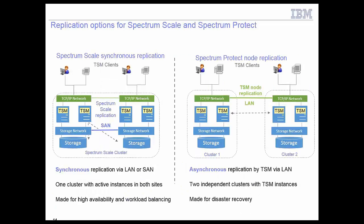There are two replication options. The first is Spectrum Scale synchronous replication, where instances run on both sides on NSD servers and each Spectrum Protect instance writes data twice — once to the local storage and once to the remote storage. This replication is synchronous and focused on high availability. If an instance fails on one side, it can be very quickly restarted on the other side because the file system is available across both sites. We don't have to worry about importing volume groups or resolving reservation conflicts. It is one cluster stretching across both sites.